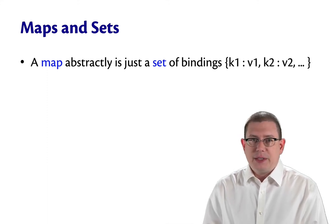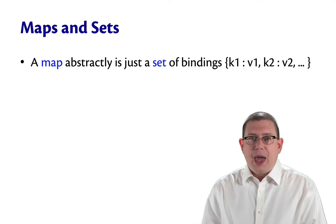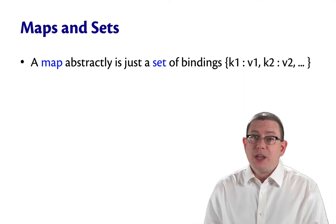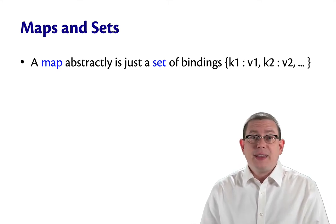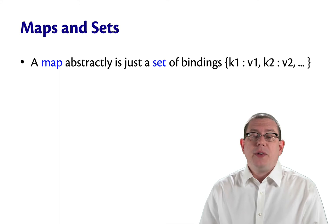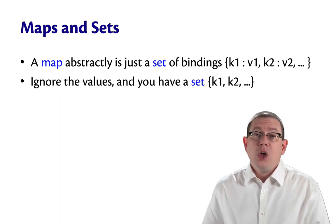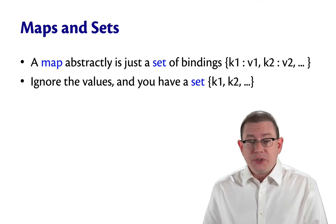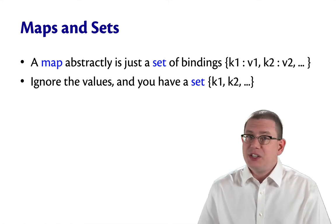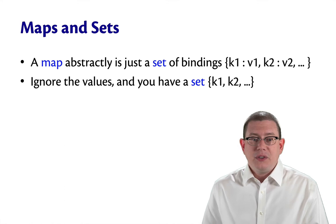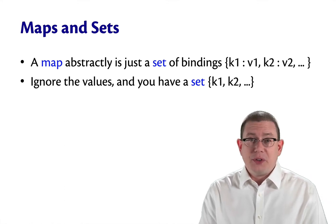Let's think about maps versus sets for just a minute. Abstractly, a map is really just a set of bindings. In fact, that's the abstract notation we've been using for it, is set notation. A map might bind a key k1 to a value v1, a key k2 to a value v2, and so forth. Well, if you just ignore the values, you've got a set. It's just a set of keys. So right away, maps and sets are pretty closely related.